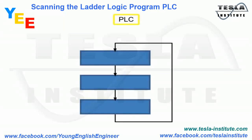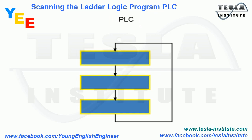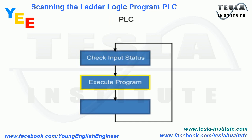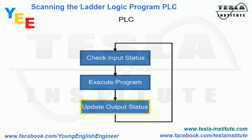PLCs control processes by continually scanning the Ladder Logic Program. The scan of a PLC consists of three major steps: Step 1, Check Input Status; Step 2, Execute Program; and Step 3, Update Output Status.